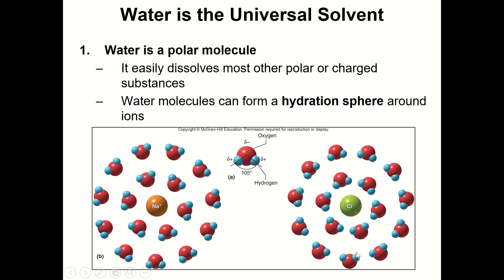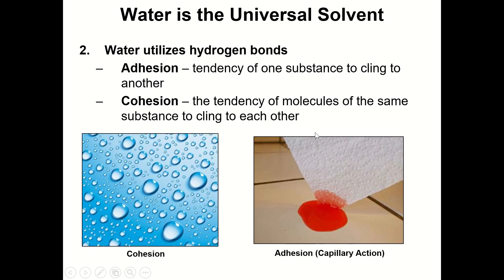Anytime you have water molecules forming rings like this around ions, we refer to that as a hydration sphere, and that allows those ions to stay more or less dissolved within space. Recall that ionic bonds are easily broken when water is added — this is the reason why: the chemistry of water being a polar molecule.